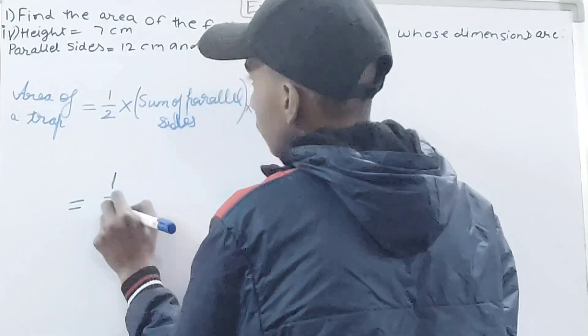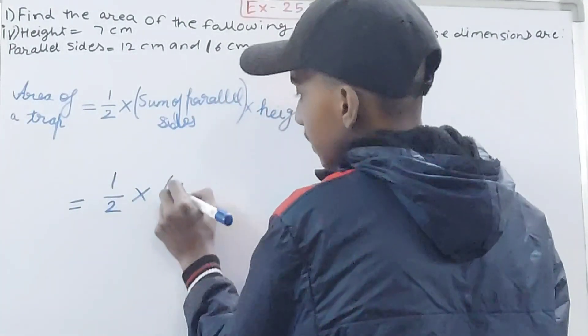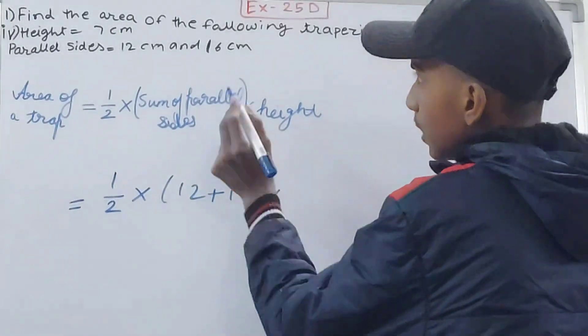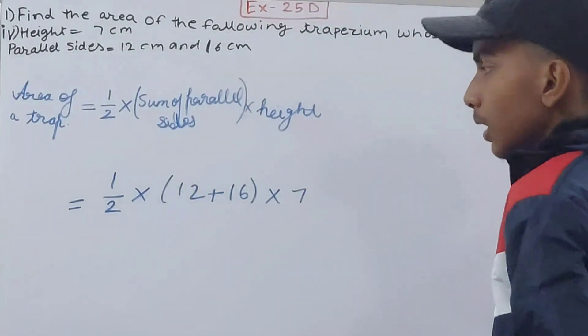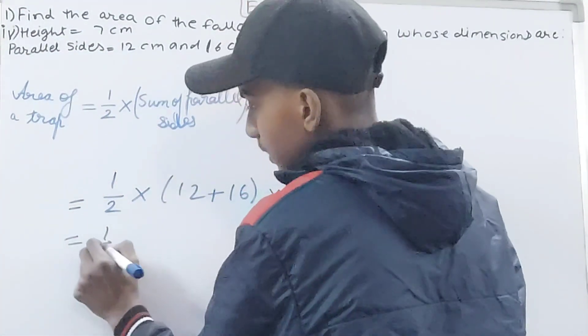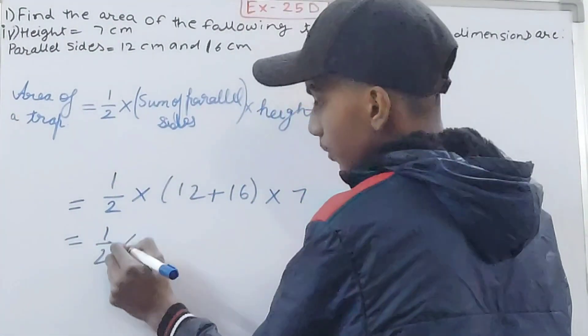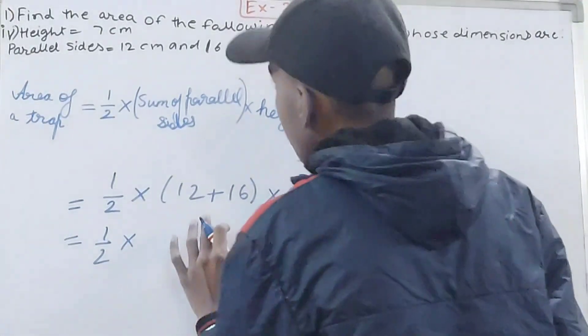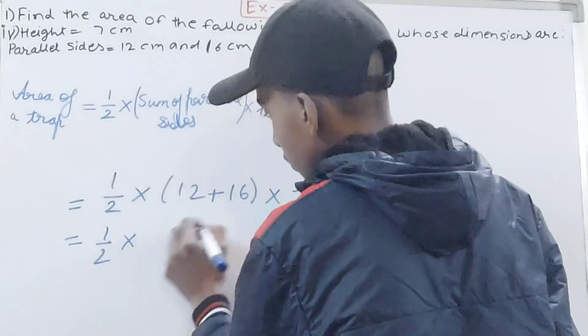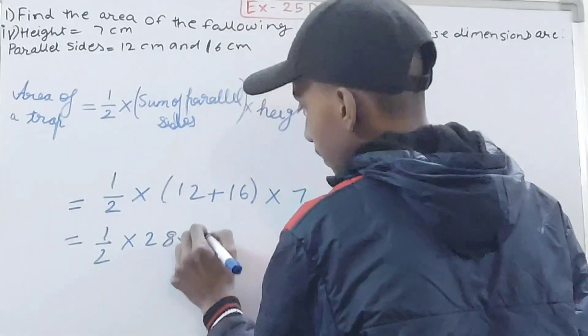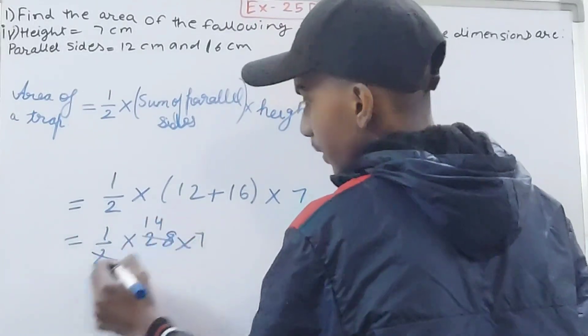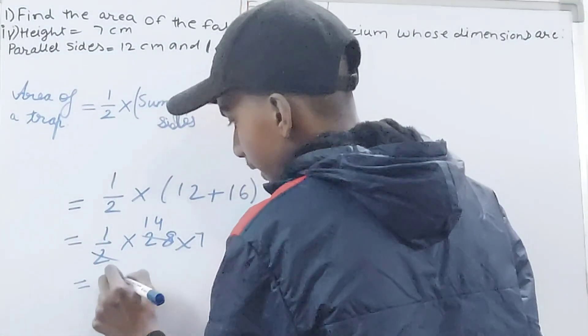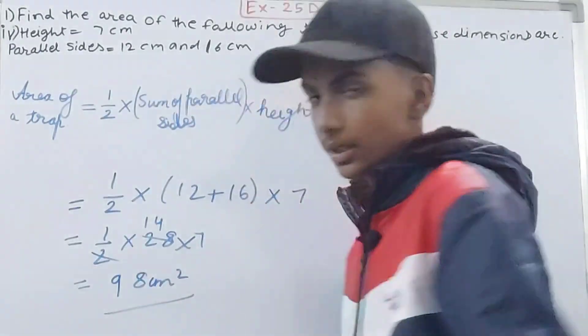Let's go to the next part now. See the fourth part we've got here. Again 1/2 into sum of parallel sides that is 12 and 16, and then into you have 7 here. So again solve, open the bracket because nothing can be cancelled outside of it. So 1/2 into 12 plus your 16, 12 plus 16, this is 28, and into 7. Cancel this and this by 2, I am canceling, so 14 into 7, this is coming out to be 98 square centimeters, and that's your answer.